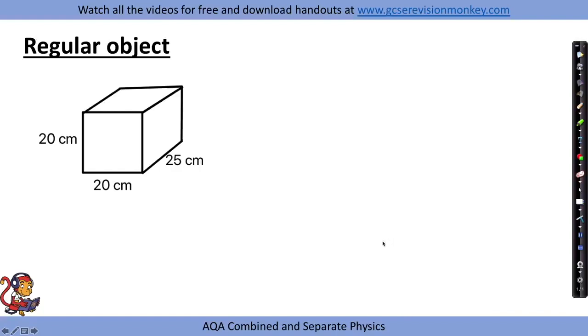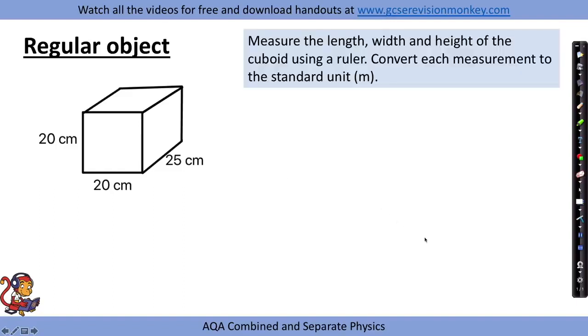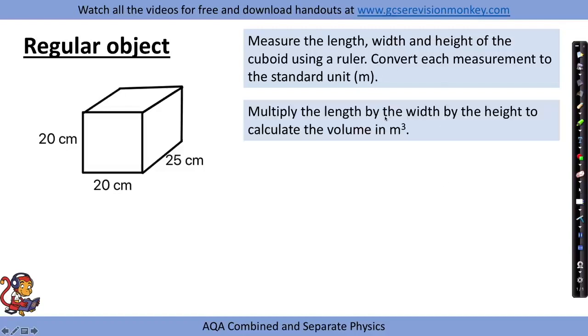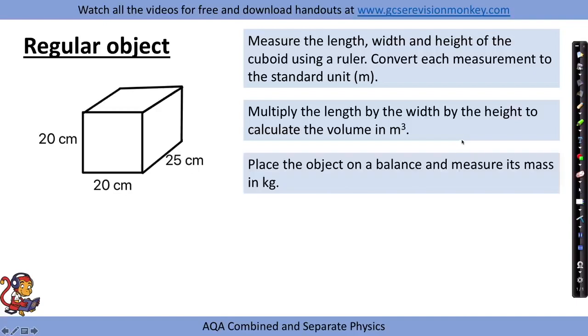For a regular object like a cuboid, measure the length, width, and height using a ruler and convert each measurement to meters. Multiply the length by the width by the height to calculate the volume in meters cubed, then place the object on a balance and measure its mass in kilograms. Finally, calculate the density using density equals mass over volume.